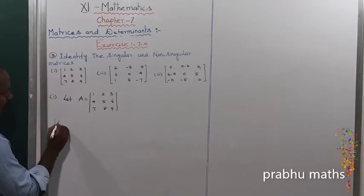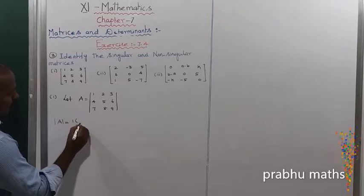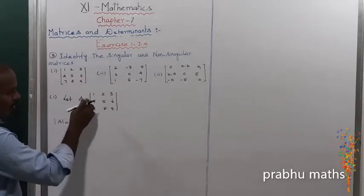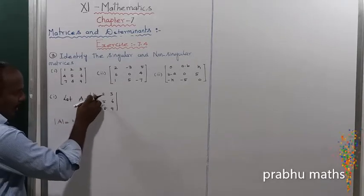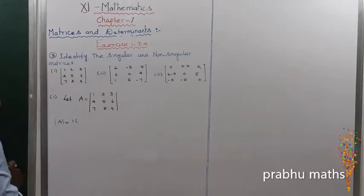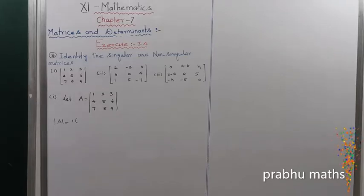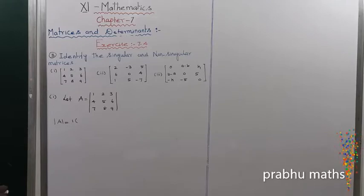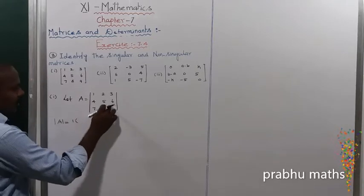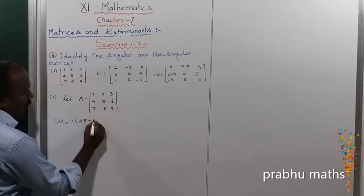Next, find out det(A). So, det(A) is equal to 1 into the remaining 2x2 submatrix. The first diagonal multiplication is 45, and the second diagonal multiplication is 48. So the first term gives 1 into (45 minus 48).